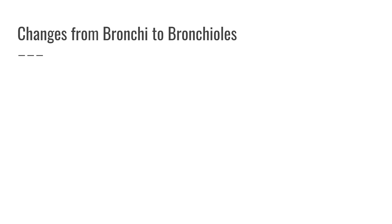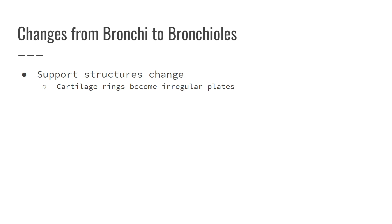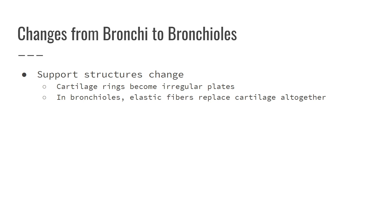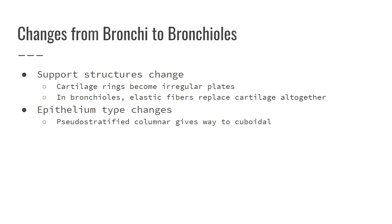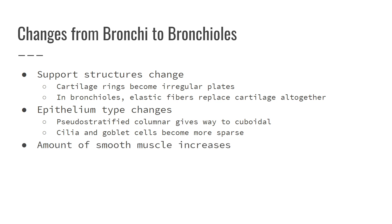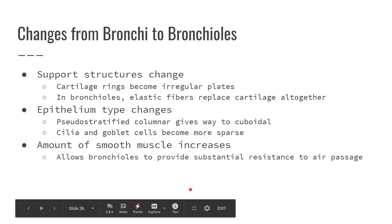Some structural changes occur as we move through our bronchial tree. In the trachea the cartilage rings are solid C's, but further down they become just little plates or pieces, and when we get down into the bronchioles — the one-millimeter ones — there's no cartilage, only elastic fibers. Epithelium type changes too: it's pseudostratified in the larger bronchi, but in smaller ones it becomes cuboidal epithelium. Cilia and goblet cells are less common, and the amount of smooth muscle increases. So basically cartilage decreases and smooth muscle increases. If you have asthma, that could be an overreaction of your smooth muscle, which is causing your airway to narrow.